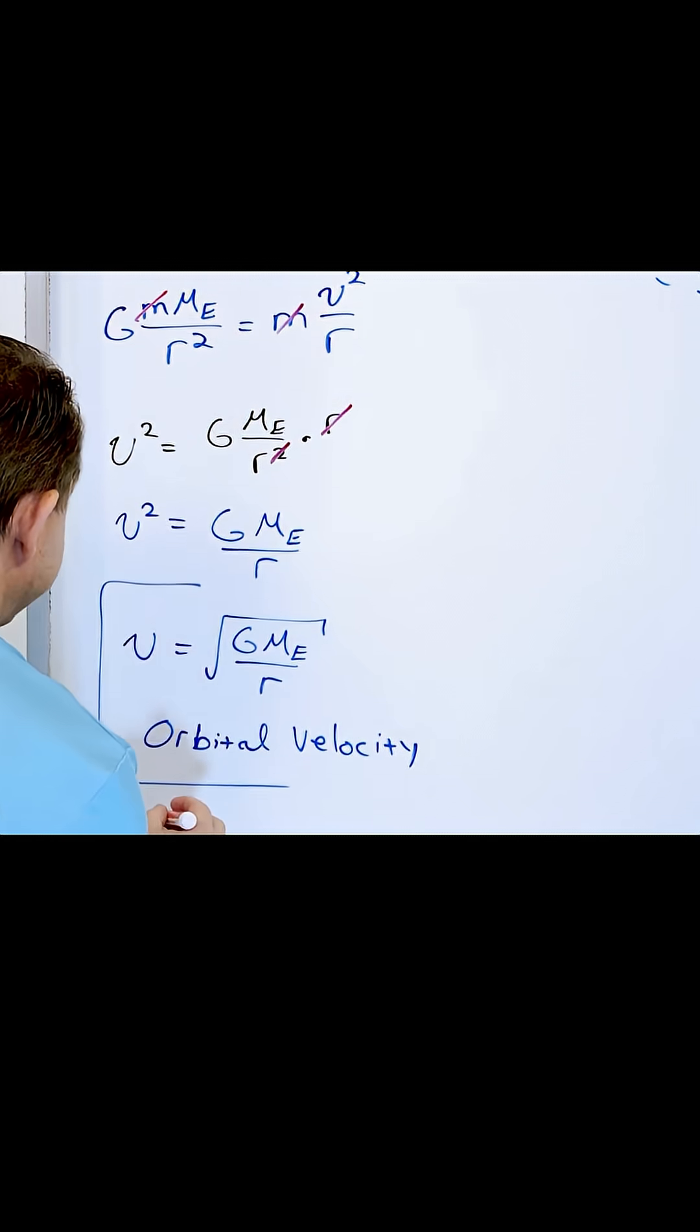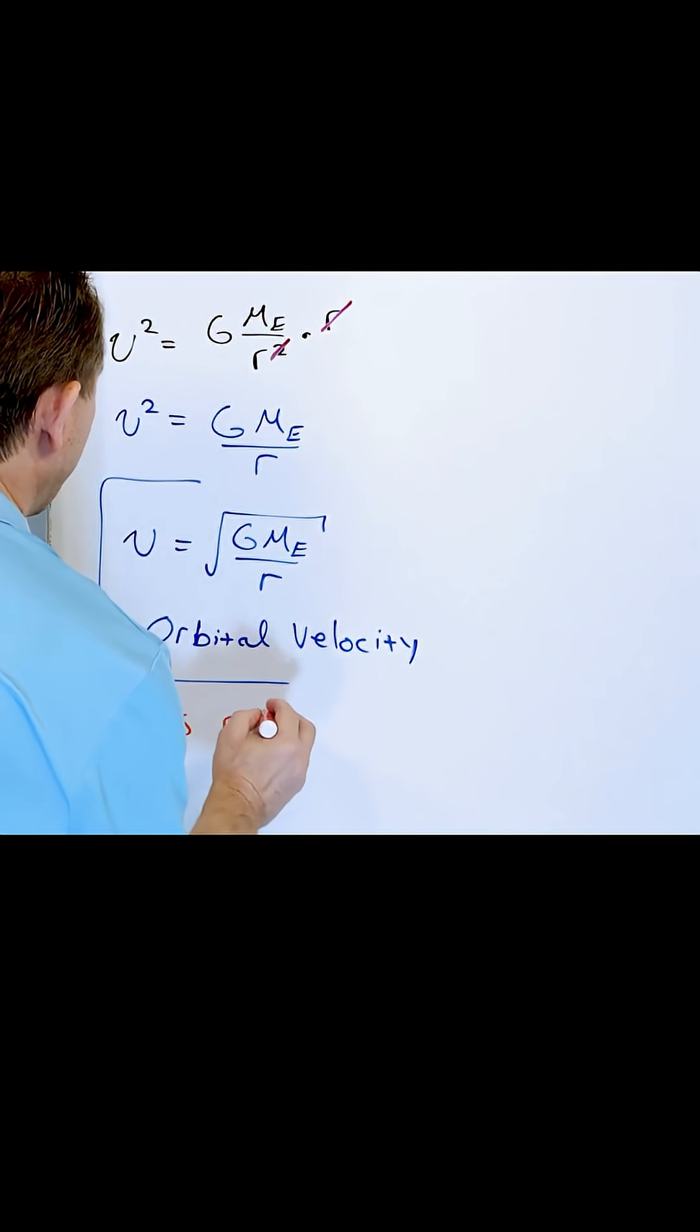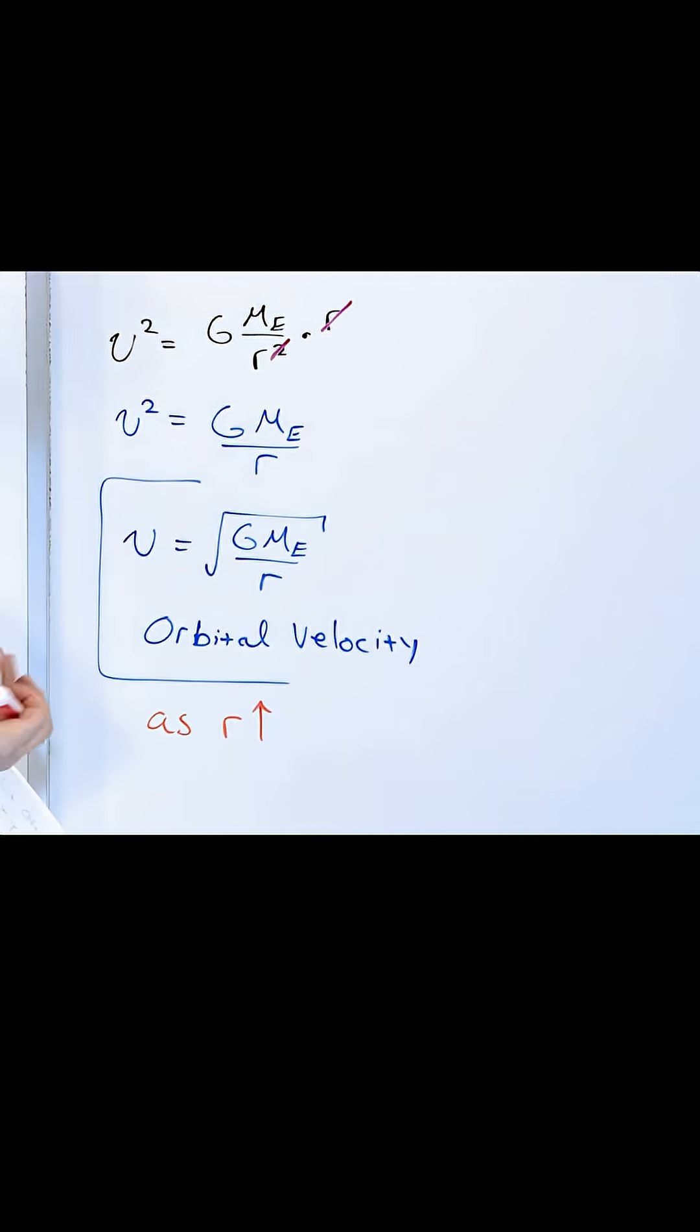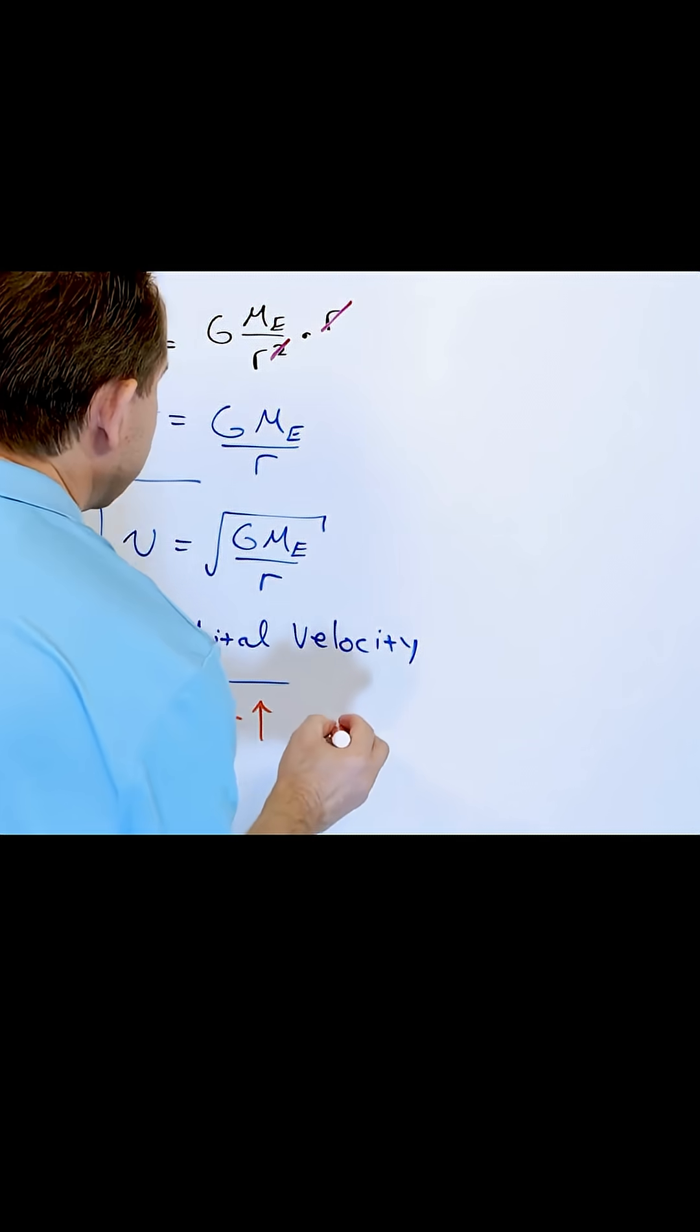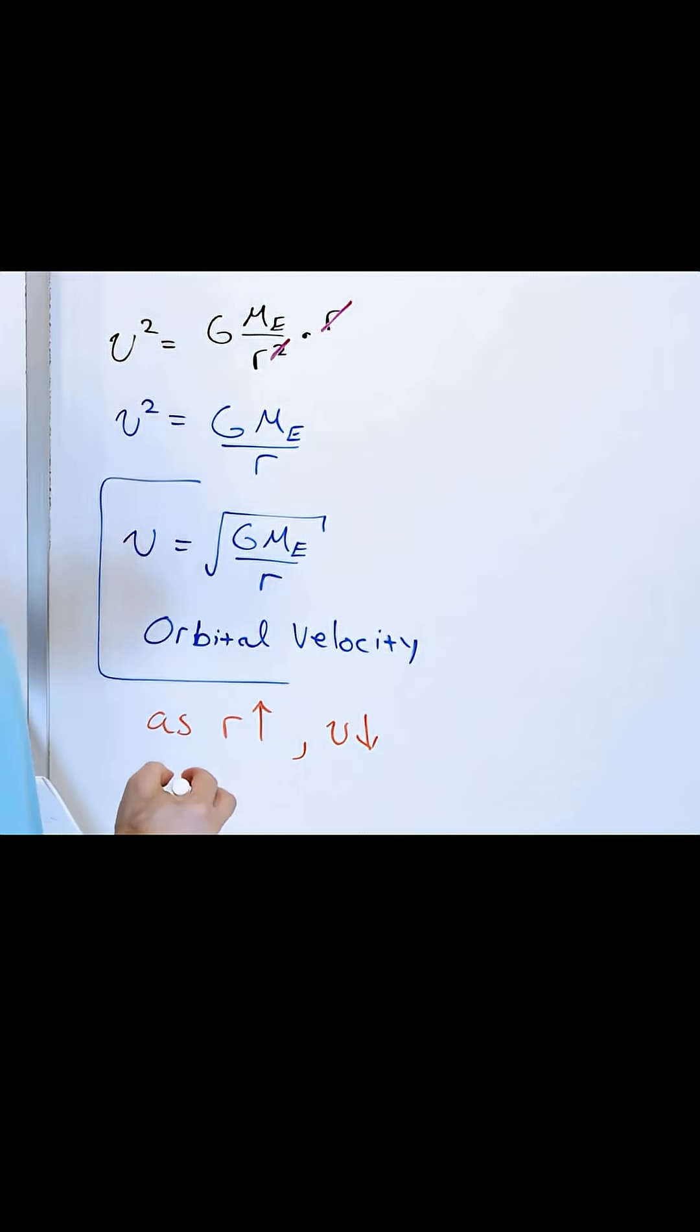And the other thing I want you to know is that as the distance away goes up, as the orbital radius goes up, the velocity goes down. The orbital speed goes down.